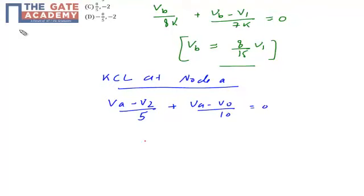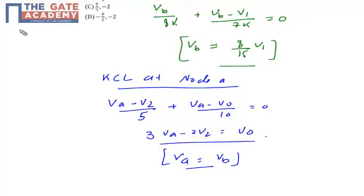By simplification you get 3 VA minus 2 V2 equals V0. Since the op-amp is ideal, it satisfies the property of virtual ground, which means VA equals VB. Substituting, we get 3 VB minus 2 V2 equals V0, or 3 into 8 by 15 V1 minus 2 V2 equals V0, which gives 8 by 5 V1 minus 2 V2 equals V0.